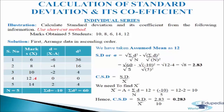In the third column d = x − a. With a = 12: 6 − 12 = −6, 8 − 12 = −4, 10 − 12 = −2, 12 − 12 = 0, 14 − 12 = 2. We get σd = −10. In the fourth column d²: 6² = 36, 4² = 16, 2² = 4, 0² = 0, 2² = 4. We get σd² = 60.